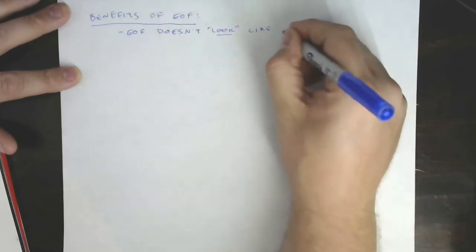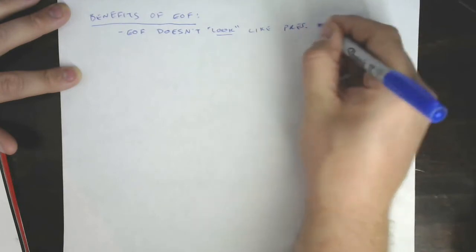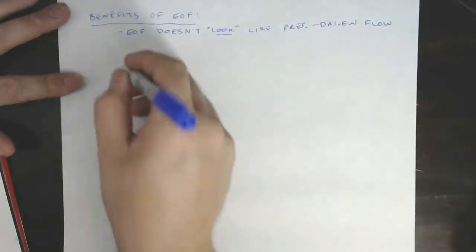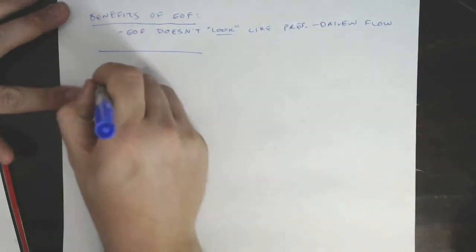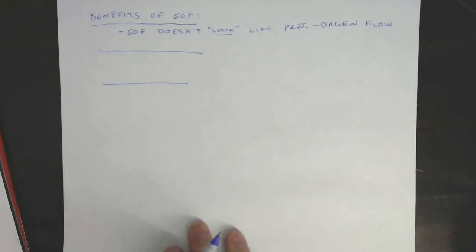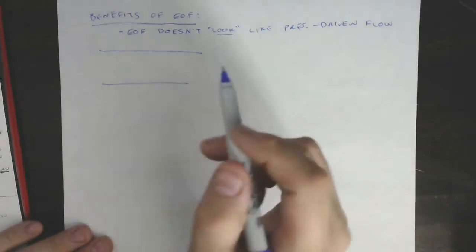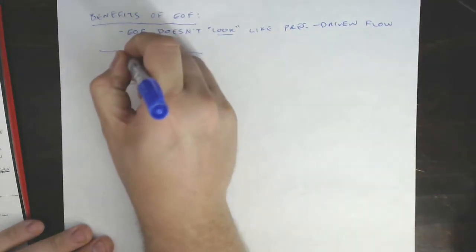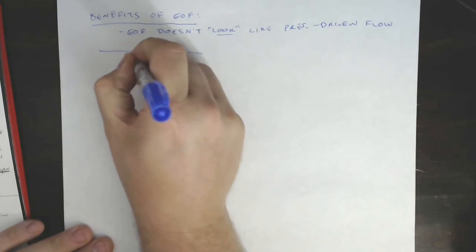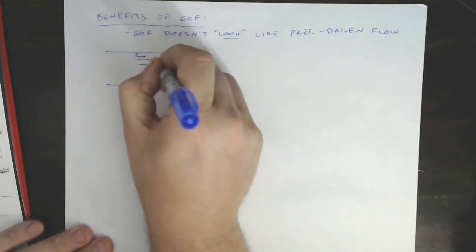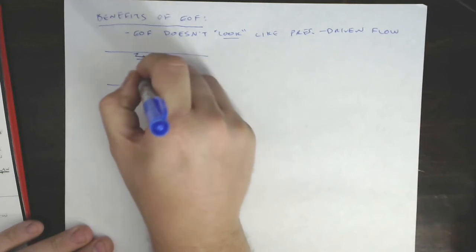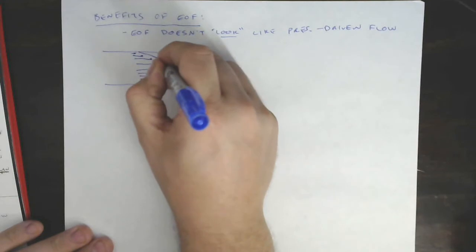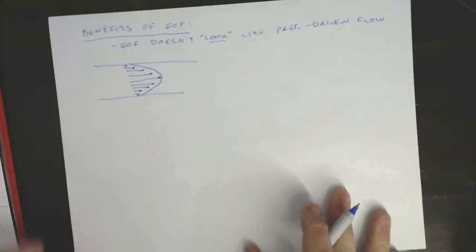look like pressure driven flow. So what does that mean? Well, we learned that in pressure driven flow there is essentially a shear force that happens at the wall, a drag, a friction at the wall, that causes this parabolic-like flow profile. That is, velocities go faster as you get towards the middle and they slow down towards the edge, and so you get this flow profile that looks like a parabola.